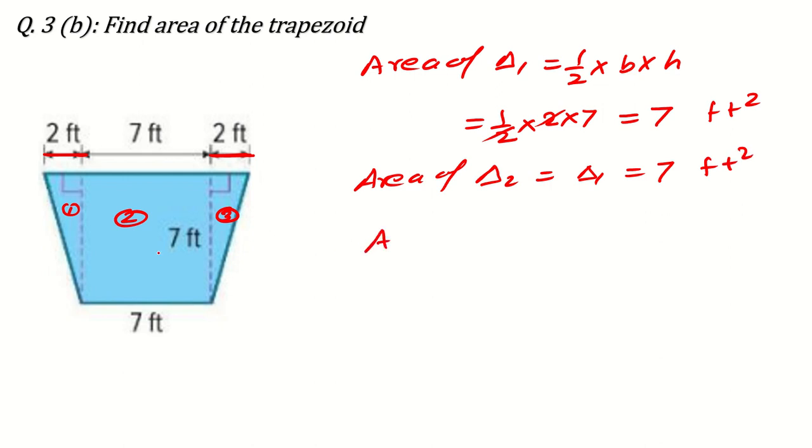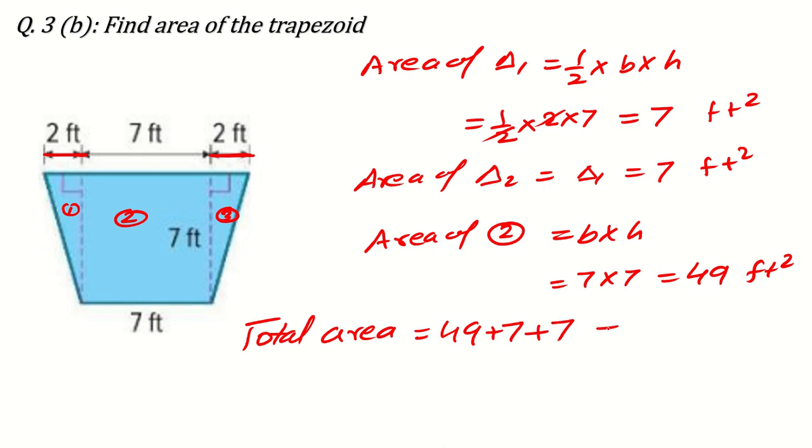And area of 2, this area of 2 or you can say rectangle 2. So, it is equal to base times height means 7 times 7. It is equal to 49 feet square. So, total area how much? Total area is equal to 49 plus 7 plus 7 means 49 plus 7, 56, 56 plus 7, 63 feet square. Was that the same answer what I got before? Just let's check the calculation once again. 2 multiply 7 by 2 means 7, then 7 here also. 7 times 7, 49. 7 plus 7, 14, 14 and 9, 23, 23 plus 40, 63. Yes.